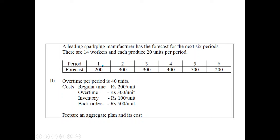The periods are given in a table along with the forecasted values of the spark plugs. In the first month the forecasted spark plugs are 200, second month 300, third month 300, fourth month 400, fifth month 500, and sixth month 200. The overtime per period is also given in the table.